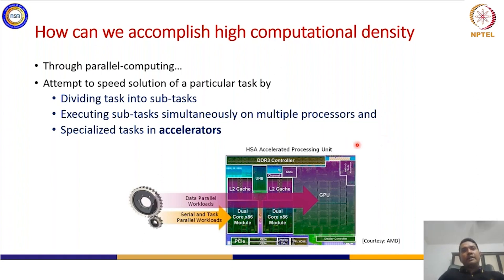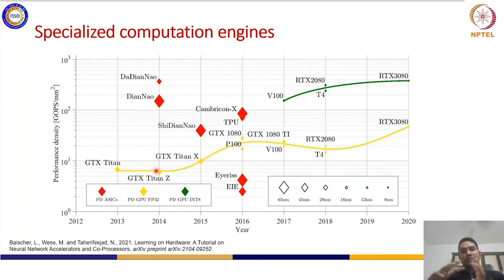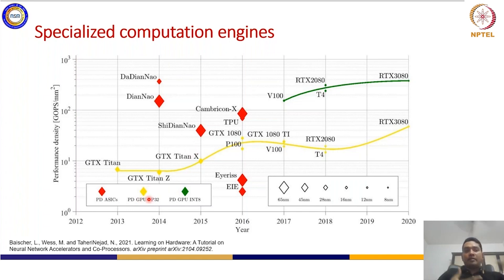What kind of accelerators are available nowadays? We talk about specialized computation engines for AI benchmarks. This graph shows the trends from 2012 to 2020, with different computation engines. We have ASICs — Application-Specific Integrated Circuits — which are highly specialized only for AI benchmarks. We also have GPUs, which give you the flexibility to run both AI benchmarks as well as video or graphics benchmarks.